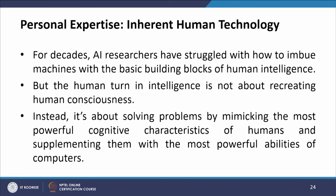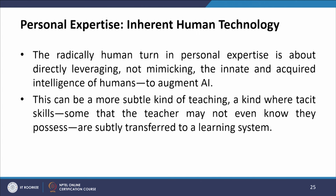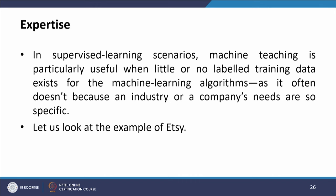For personal expertise, AI researchers have long struggled to imbue machines with the basic building blocks of human intelligence. The radically human turn in personal expertise is about directly leveraging — not mimicking — the innate and acquired intelligence of humans to augment AI. This can be a subtle kind of teaching where tested skills, some that the teacher may not even know they possess, are subtly transferred to a learning system. In supervised learning scenarios, machine teaching is particularly useful when little or no labeled training data exists, as is often the case when an industry or company's needs are highly specific.